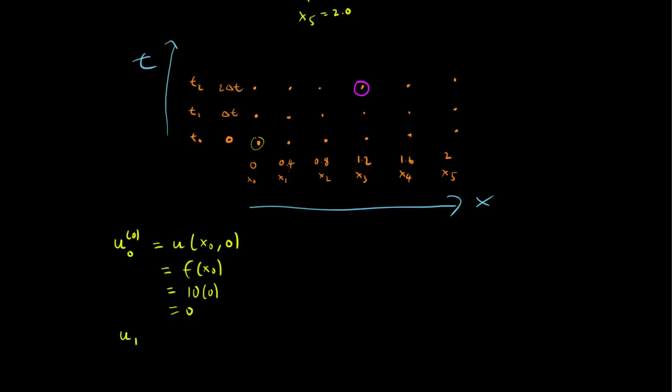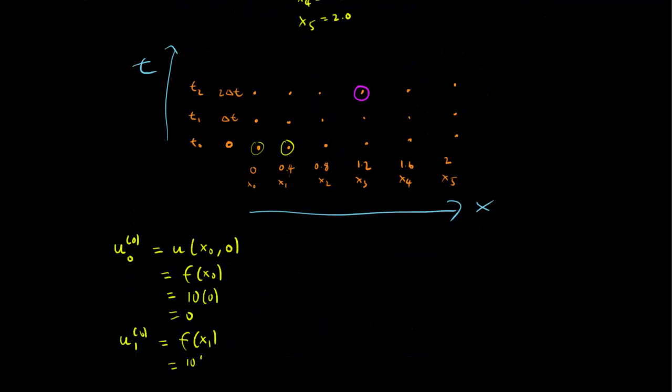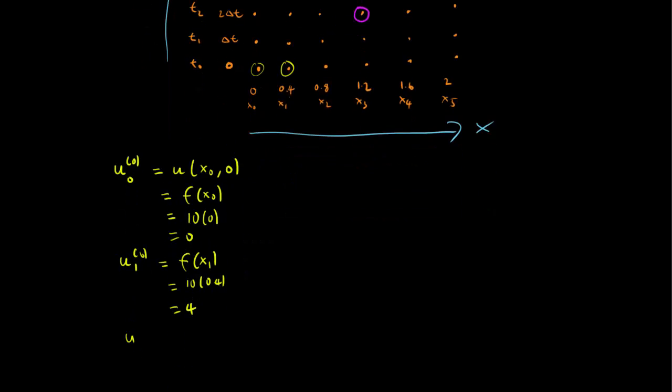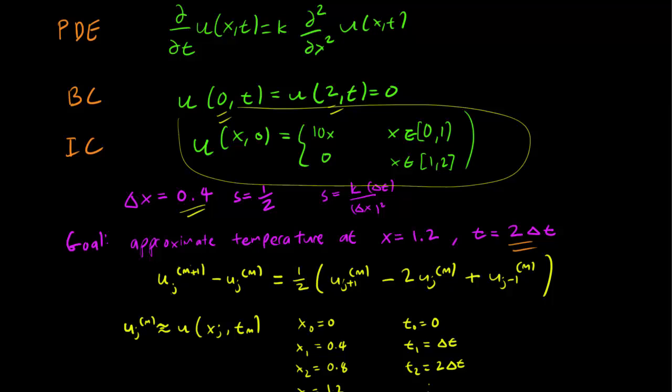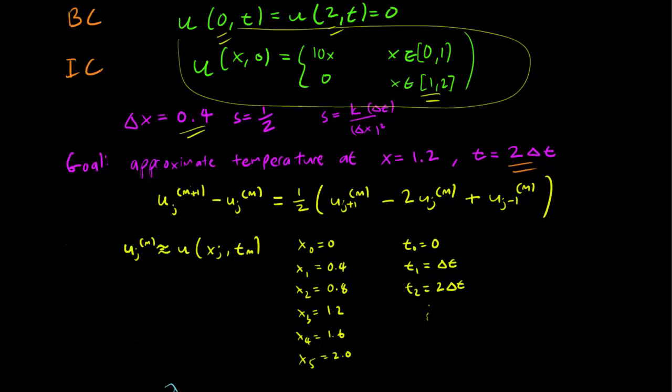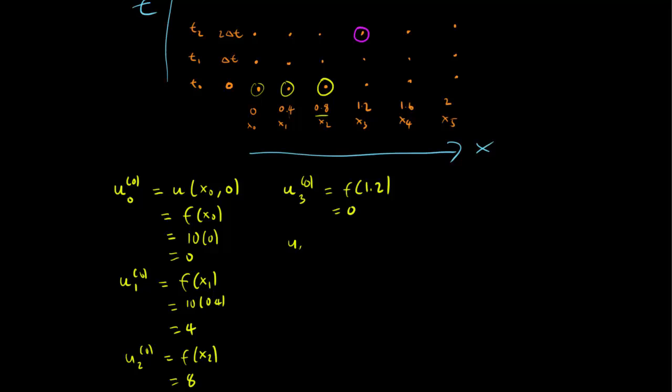We can do that similarly. So u_1^0, so this is the next point. This is going to be equal to f(x_1), and that's just going to be, x_1 is 0.4, and that's going to be 10 times 0.4 equals 4. Similarly, we can do u_2^0 is equal to f(x_2). f(x_2) is just going to be 0.8, and that's just going to be equal to 8. u_3^0, however, this is just going to be equal to f(1.2), f of x_3, 1.2. But remember what our initial condition was? Our initial condition was that we had a function that is 0 from x equals 1 to 2. So since 1.2 is bigger than 1, this is just going to be equal to 0. And in fact, all the other bigger ones are. So f of 1.6 is also equal to 0, f of 2 is also equal to 0. All right, so we have all these values for u, and this will consist of our initial conditions. We know what these are, and our goal is to get to the pink dot over there.